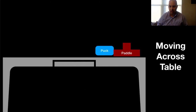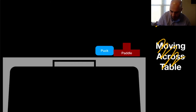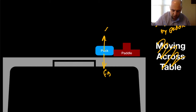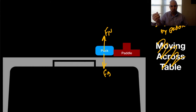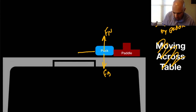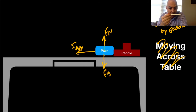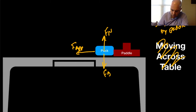Now let's say the puck is being stopped by the paddle. We still have the force due to gravity and the normal force, but now the paddle is pushing it to the left. So we have an applied force, which means this is unbalanced. Since it's acting to the left, the puck is going to be decelerating — it's going to be slowing down.